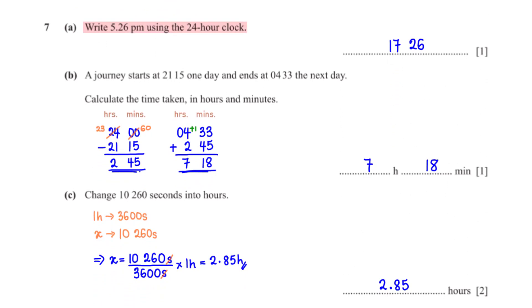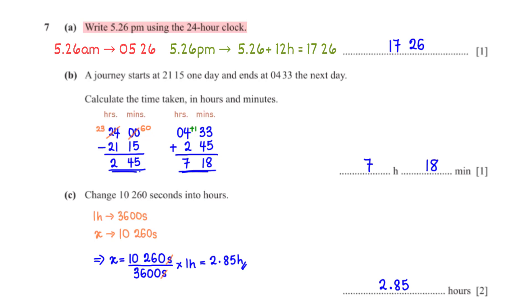Write 5:26 pm using the 24-hour clock. 5:26 am on the 12-hour clock is 05:26 on the 24-hour clock. To get 5:26 pm on the 24-hour clock we add 12 hours to 5:26, which gives us 17:26.